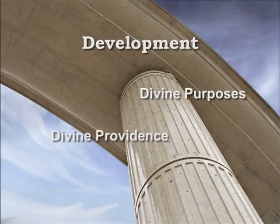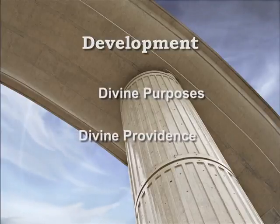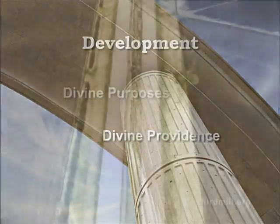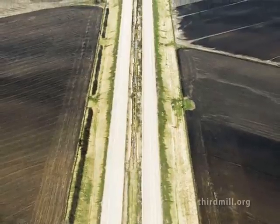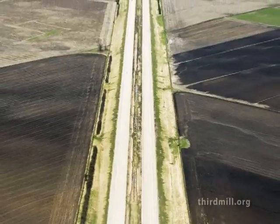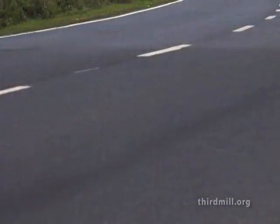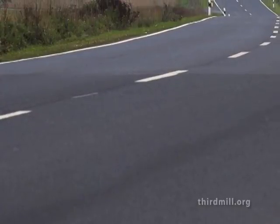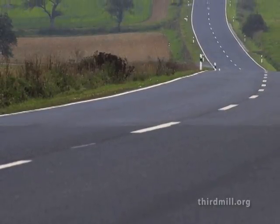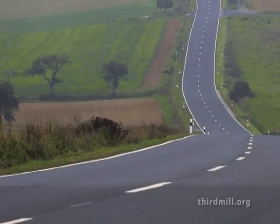Knowing that theological changes in the Old Testament moved history irrevocably toward God's goals, we need to add that these developments occurred in connection with God's providential involvement in history. When we don't pay attention to details, Old Testament theological development often appears like a road seen from a distance. When we stay far above the details, the road of theological changes looks smooth and straight. But when we take a closer look, we see that the road of the Old Testament is actually filled with steep inclines, fast ascents, and sharp turns to the left and the right. These abrupt shifts are caused by God's providence, his complex involvement with his creation.